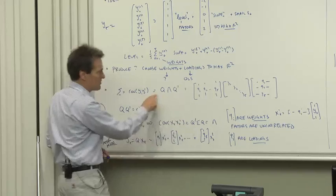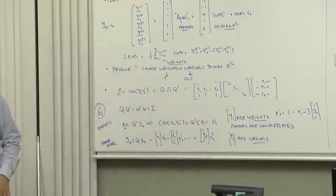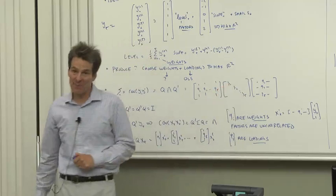But sigma is itself q lambda q prime. q prime q is the identity matrix. So the factors if you form them this way are uncorrelated with each other. And the variance of the factors is given by the eigenvalues. That's kind of pretty.